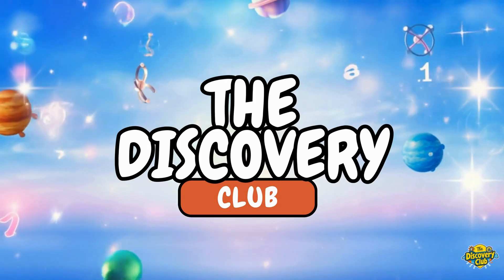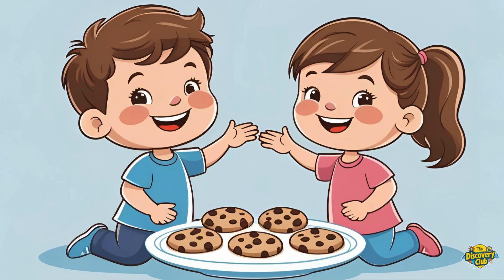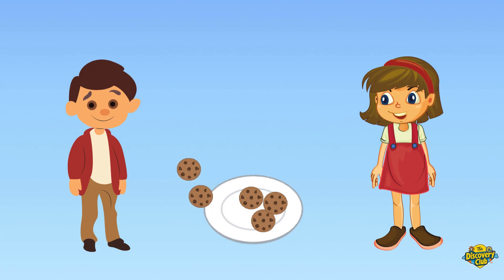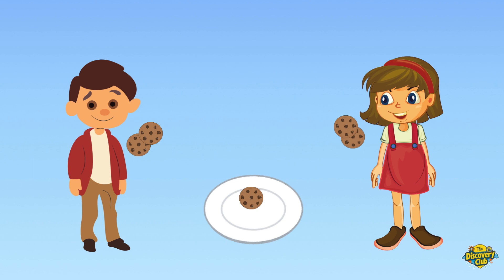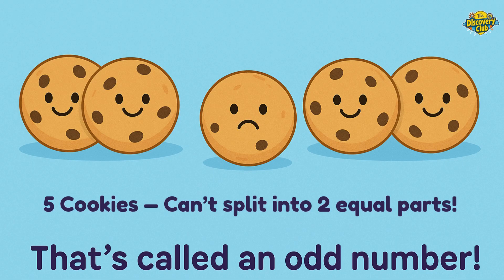You have five cookies and two friends. Can you give them both the same number of cookies? Two cookies for you, two for you, and uh-oh! One cookie is left! That means we can't split five cookies into two equal parts. A number like that is called an odd number.